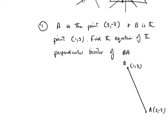The perpendicular bisector would first of all cut in the middle — I can denote that with two pairs of tick marks — and it would also cut at a right angle, meaning it would cut perpendicular. To find the gradient of the perpendicular bisector, I first need to find the gradient of line BA, and then use my knowledge of perpendicular lines to find the gradient of the perpendicular bisector.